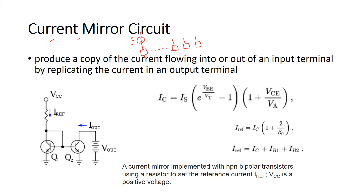What you do is design or modify the circuit in such a way that you make a copy of this current — I_reference — and then mirror that current into the other parts of the circuit. This provides the required current in each of the elements, continuing up to I_n. So the purpose of the current mirror circuit is to produce a copy of the current flowing into or out of the input terminal by replicating it in an output terminal.